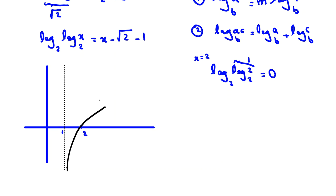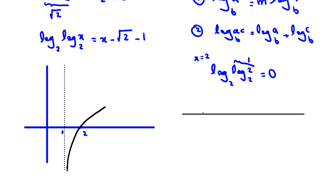So our function is approximately a curve with vertical asymptote at x = 1, passing through (2, 0). The right side is a line. The important values to check are x = 1 (asymptote), x = root 2, x = 2, and x = 4. If x = root 2: left side is log base 2 of (log root 2 base 2) = log base 2 of (1/2) = −1. Right side: root 2 minus root 2 minus 1 = −1. They match!